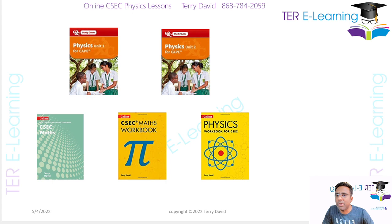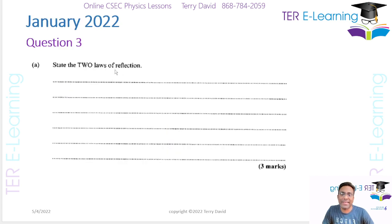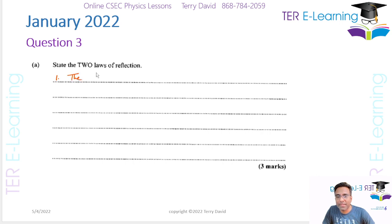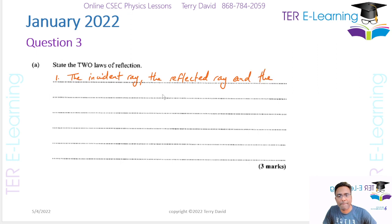The question I'm on now is the third question. It says: state two laws of reflection. If you have to answer a question like this, I suggest you sketch a diagram. So the first law is that the incident ray, the reflected ray, and the normal all lie in the same plane.